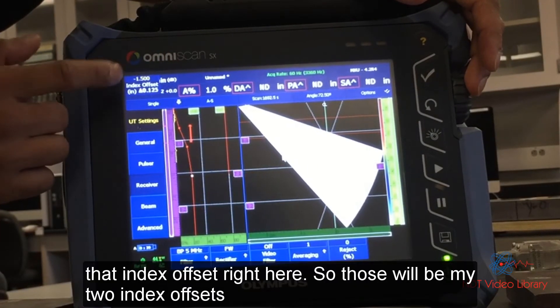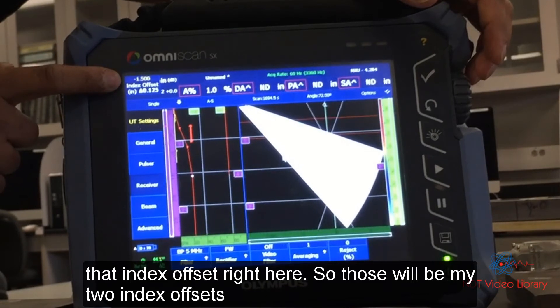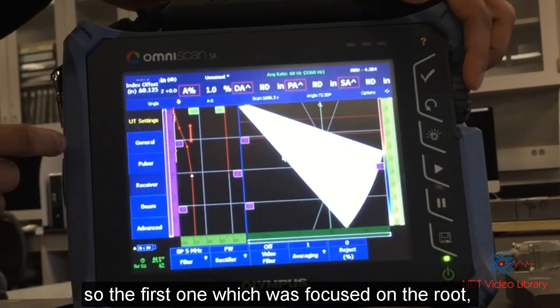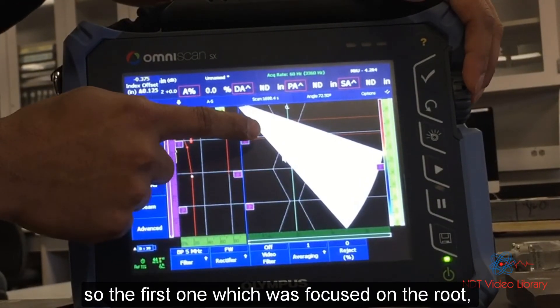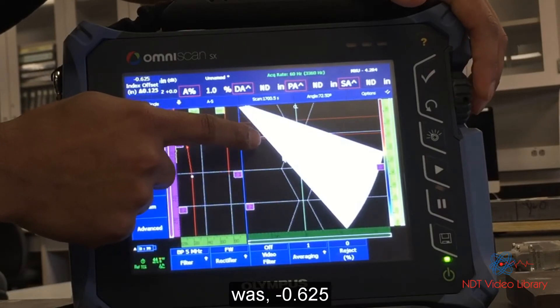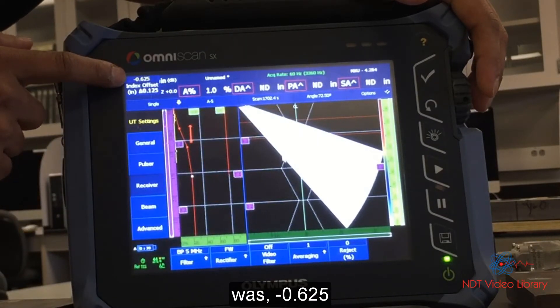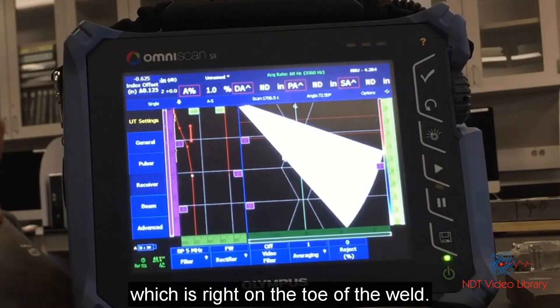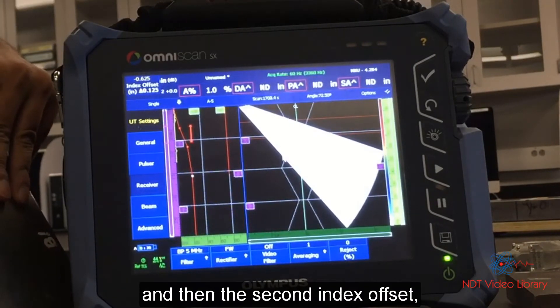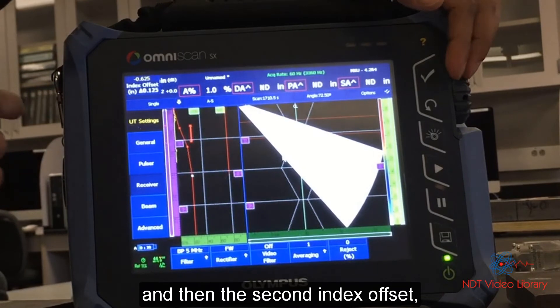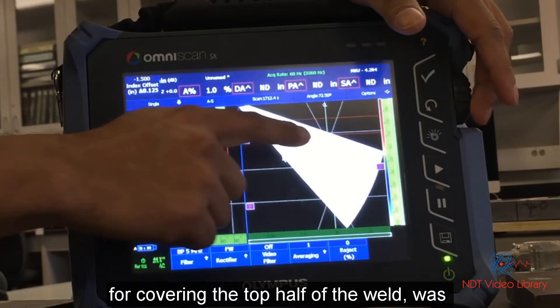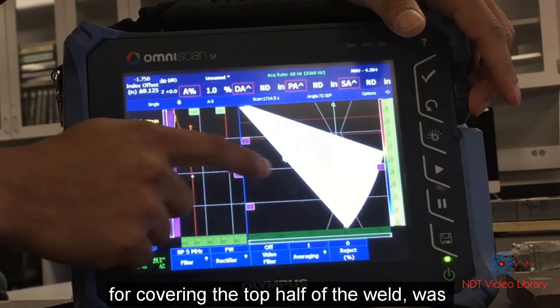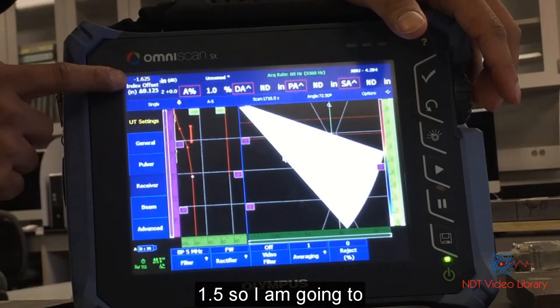And I make a note of that index offset right here. So those would be my two index offsets. So the first one, which was focused on the root, was negative 0.625, which is right along the toe of the weld. And then the second index offset for covering the top half of the weld was 1.5.